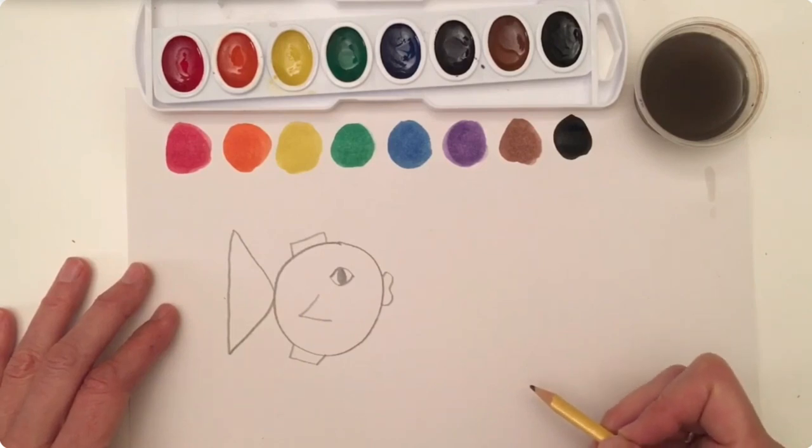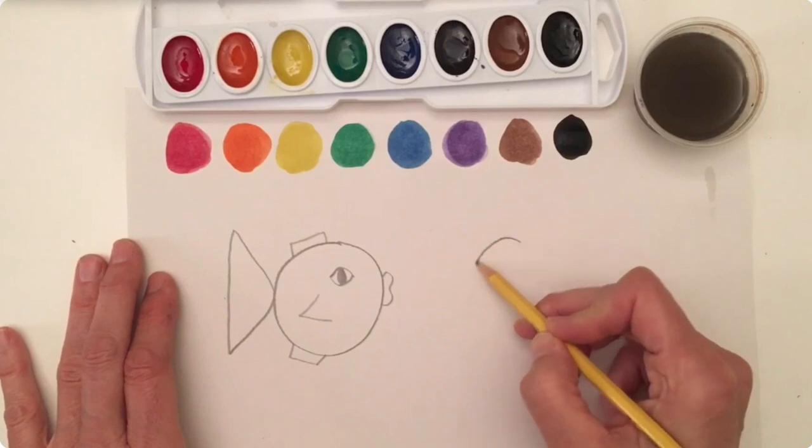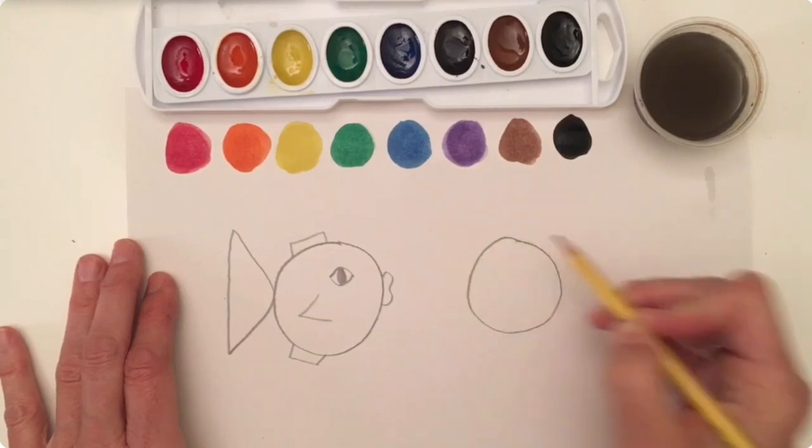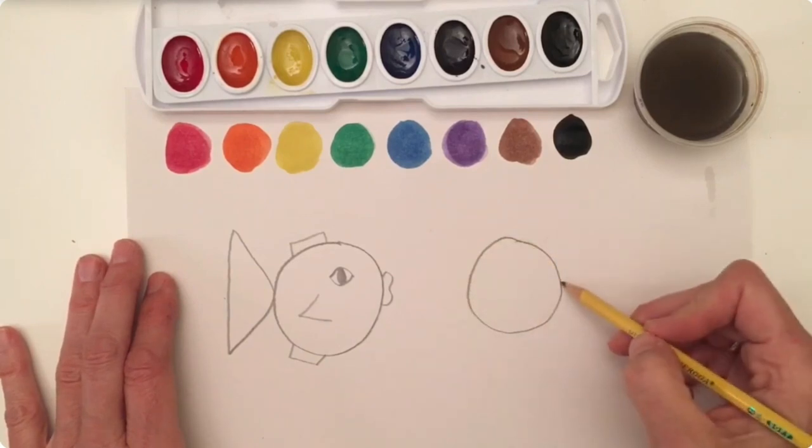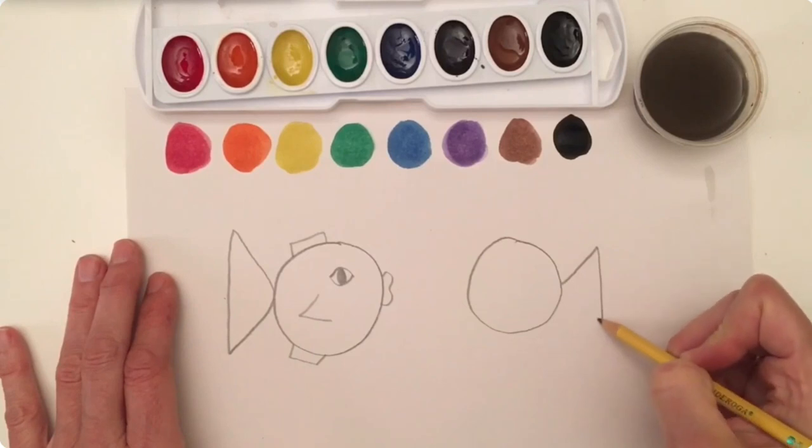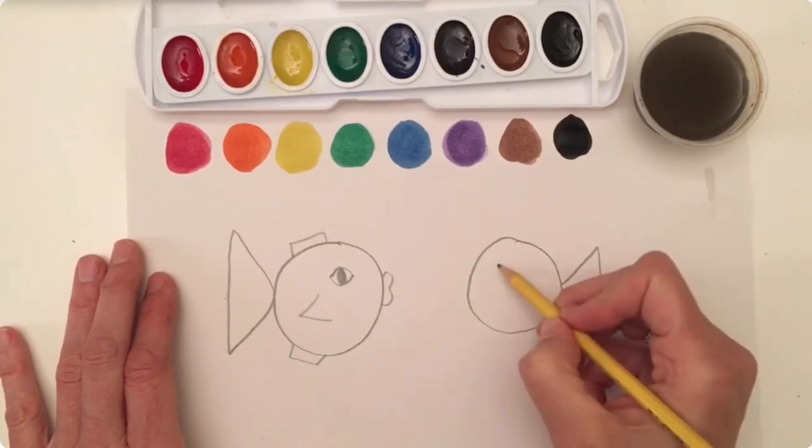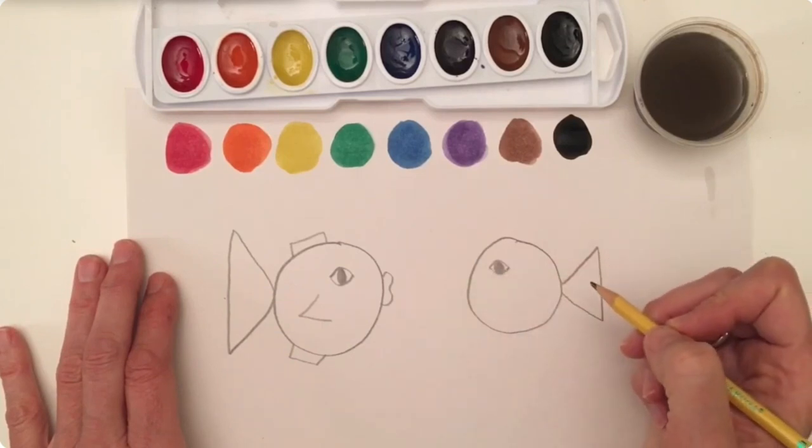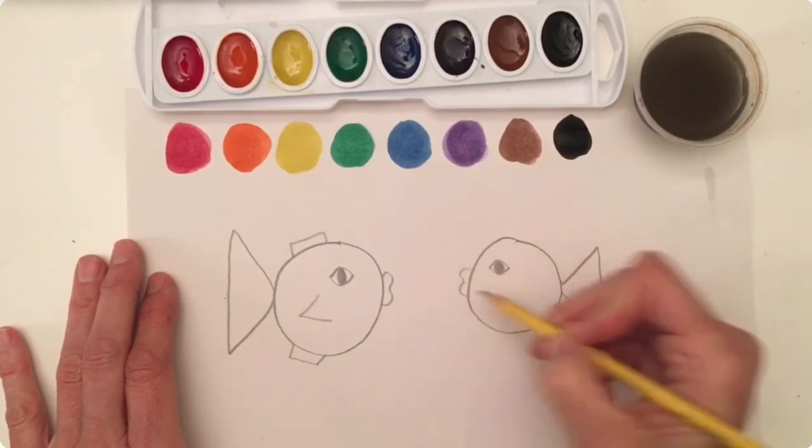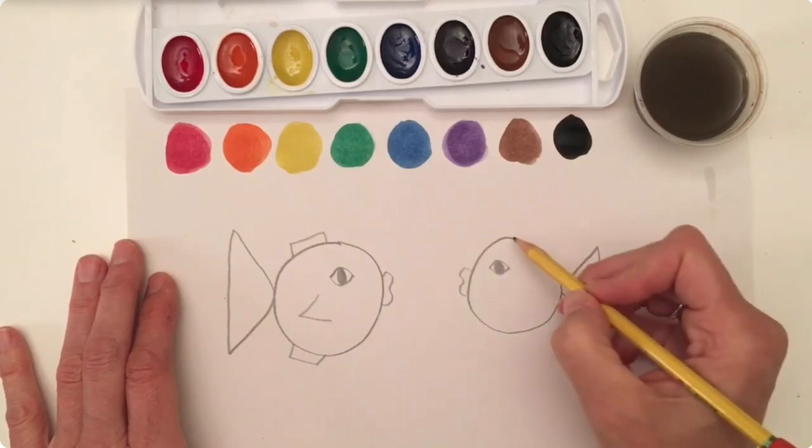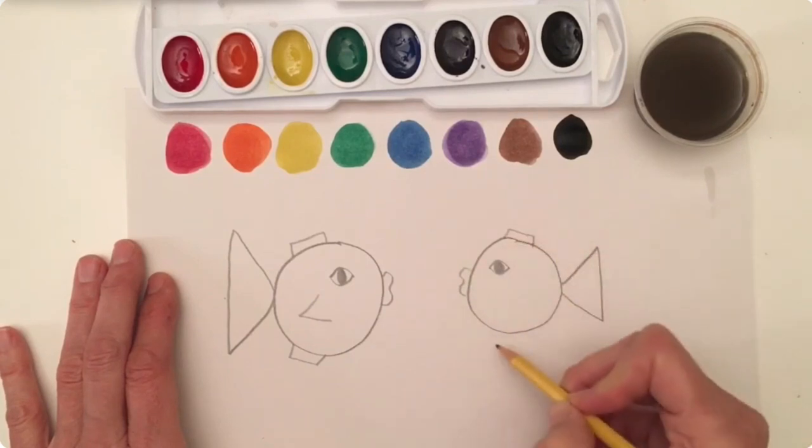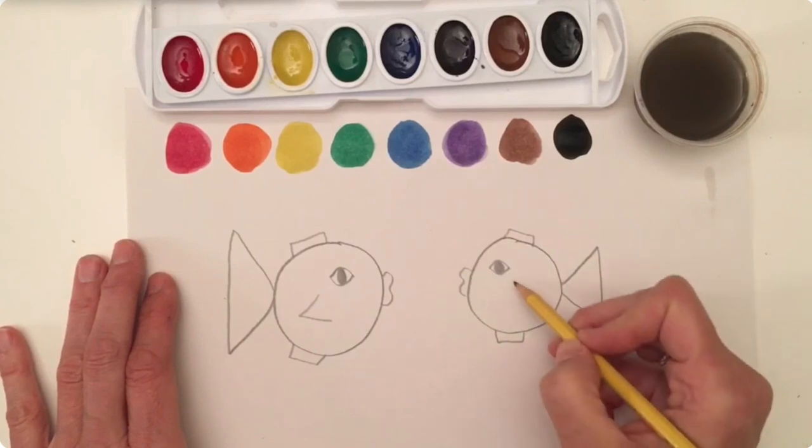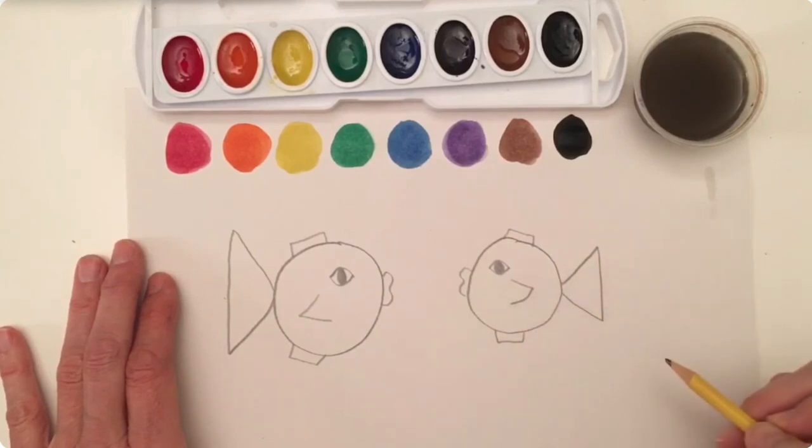Now I think it would be nice if our fish had a friend. So let's make another circle. And we will add a triangle on the back. I think we need another eye. And I'm going to make a fancy eye again. I'm going to put a rainbow on the top and a smile on the bottom. We could make some fish lips, a rectangle fin, a rectangle fin, and a fin for swimming.